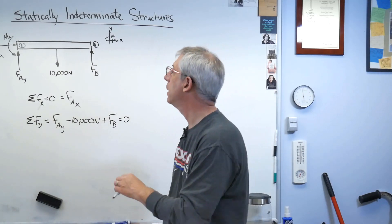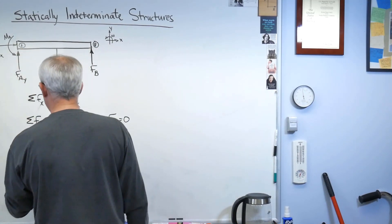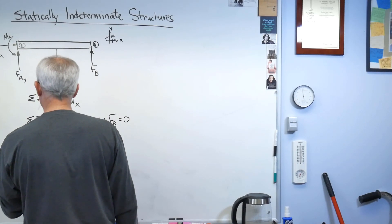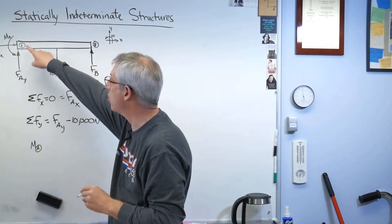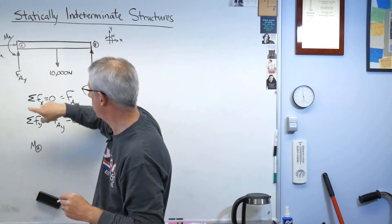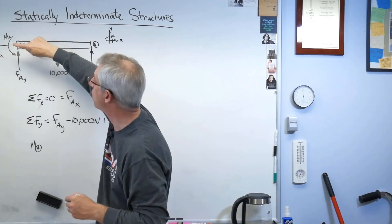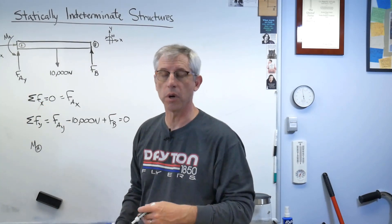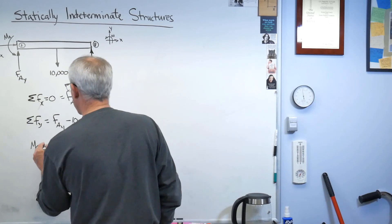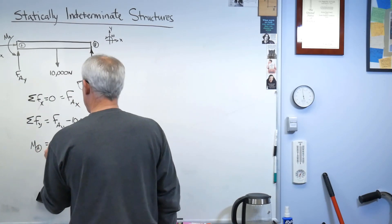Let's sum the moments about some point. Let's sum the moments about point A. You can pick any point you want, but A works. Now, I'm drawing the circle around that A to indicate that's about point A. I don't want you to get confused between this and that. That's the actual moment. This is just notation for saying I'm summing the moments about point A. So don't mix those up.